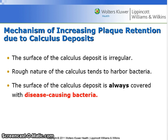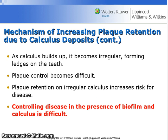Calculus deposits at the microscopic level are quite irregular. They include irregular surfaces, ledges on the teeth, and other alterations to the contour of the teeth. Since the layer of living bacterial plaque biofilm always covers a calculus deposit, dental calculus plays a significant role as a local contributing factor in periodontal disease. As calculus builds up it becomes irregular, forming ledges on the teeth and making plaque control difficult. Plaque retention on irregular calculus increases the risk for disease, and controlling disease in the presence of biofilm and calculus is difficult.